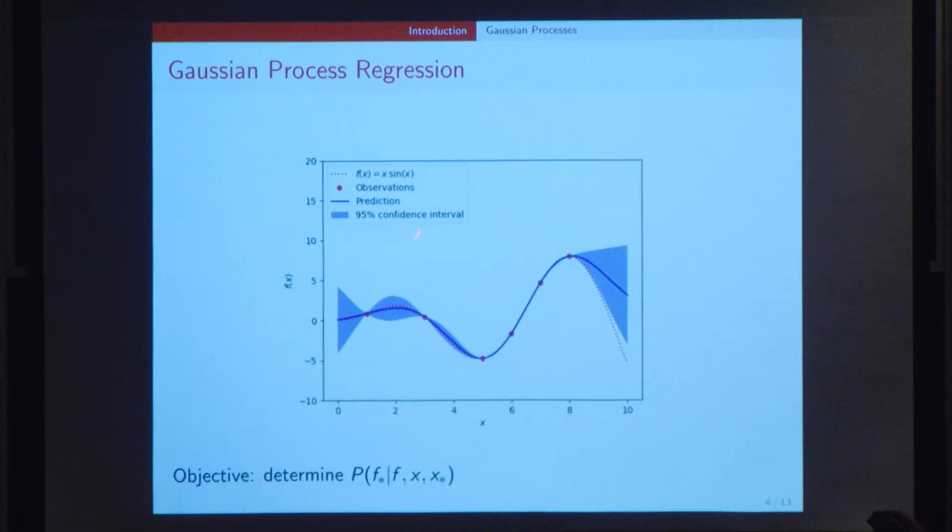One example is shown in this graph, where this red dotted line represents the function f of x equals x sin x. But the algorithm doesn't know that. All it knows are these six data points, which have no noise. Based on these six data points, it's able to make a prediction, which is represented by this dark blue line, as well as provide an uncertainty for different values of x. This is the 95% confidence interval, which is basically the uncertainty value.